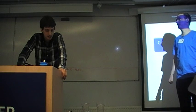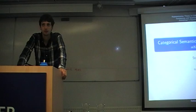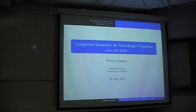I'm going to try to give a brief, broad picture of what you could do to give some categorical semantics to Schrödinger's equation.